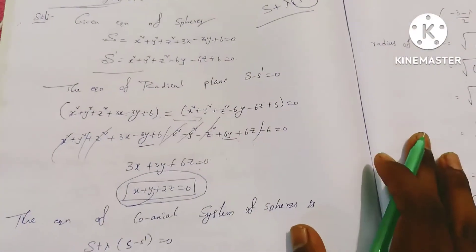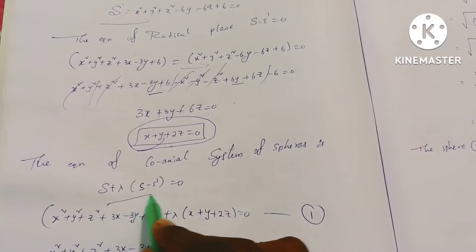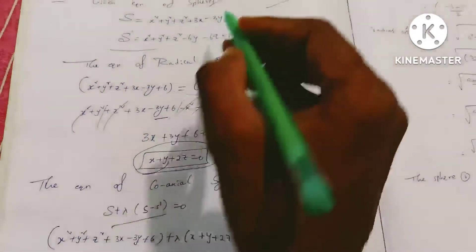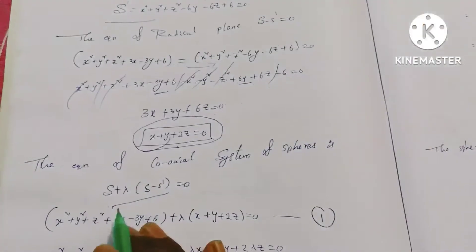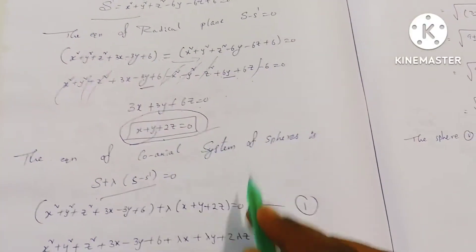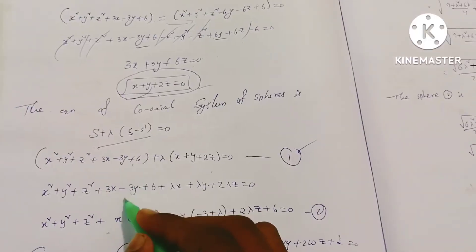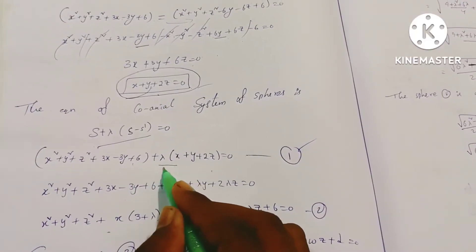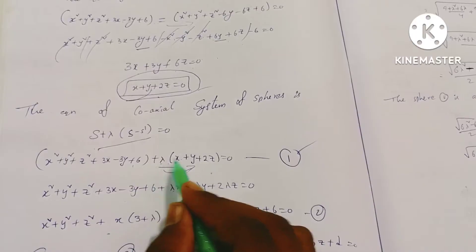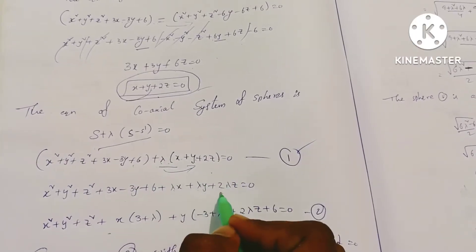Now the coaxial system of the spheres uses the formula S plus lambda into S minus S dash equals zero, where S is the first sphere equation. Substituting the radical plane, we get S plus lambda into that radical plane. Expanding the lambda terms gives: lambda x, lambda y, and 2 lambda z equal to zero.